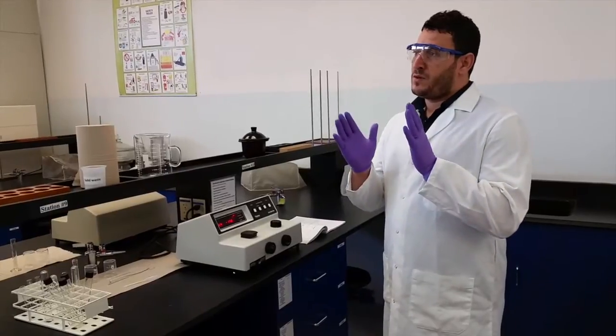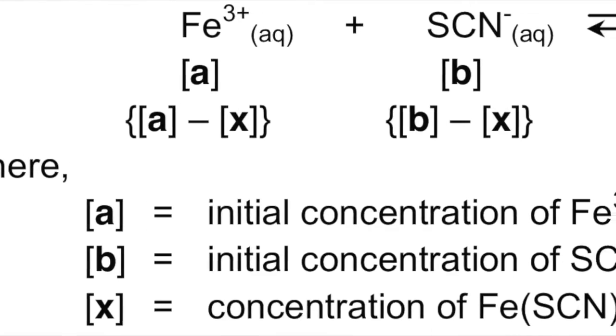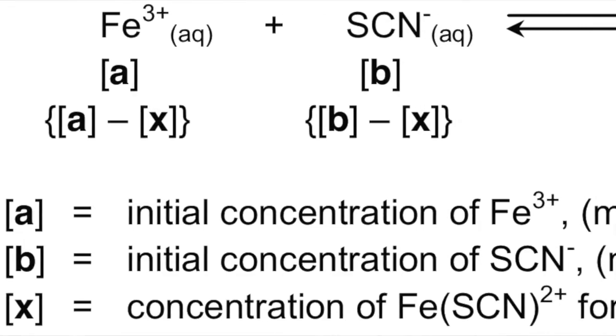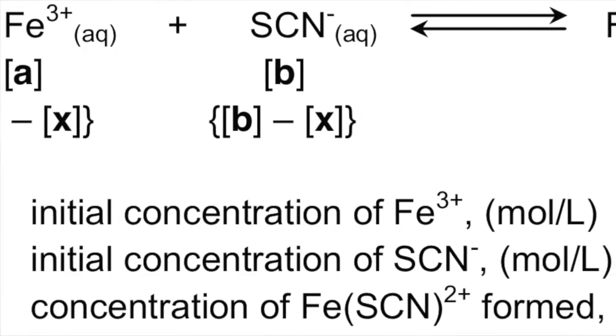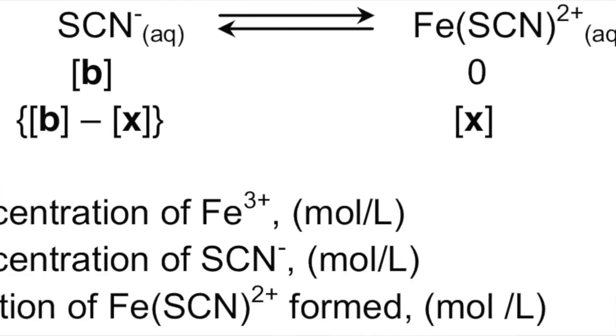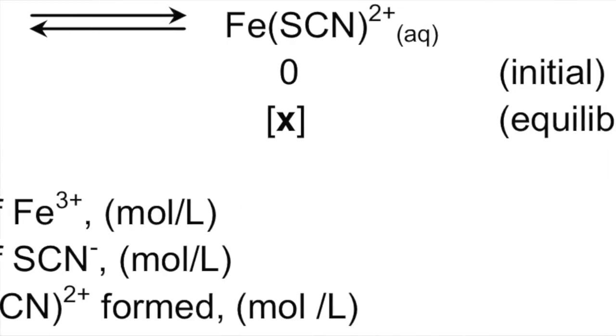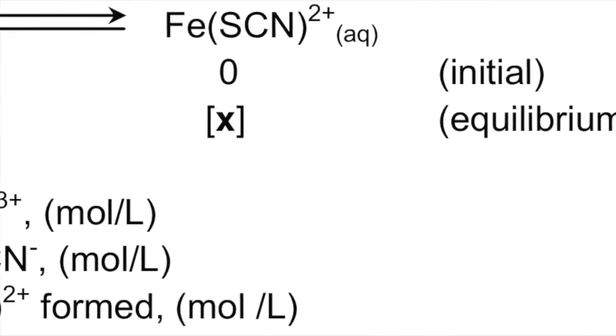We know that at the beginning there is no Fe(SCN)2+, so it's zero. Using an ICE table, we can determine the equilibrium concentration. When you set up your equilibrium, you'll put the initial concentrations of Fe3+ and SCN minus, then zero for the complex ion.